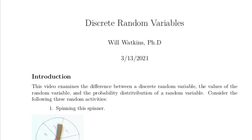There are three important things to relate and distinguish: one is what a discrete random variable is, the values that the discrete random variable can take on, and the probability distribution for that random variable.